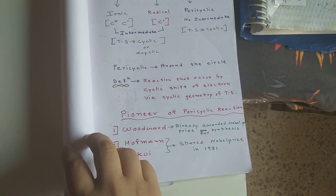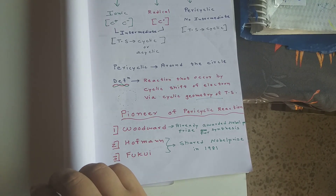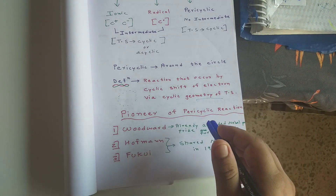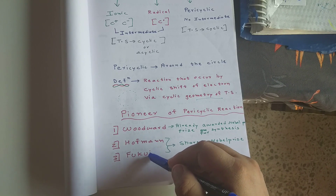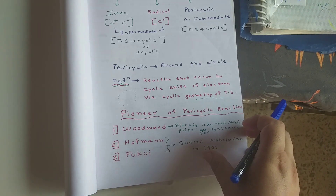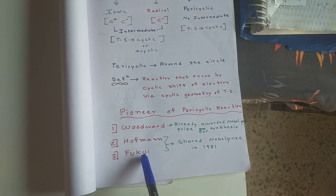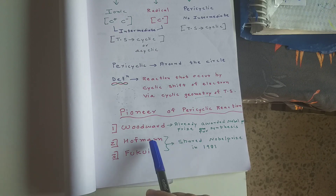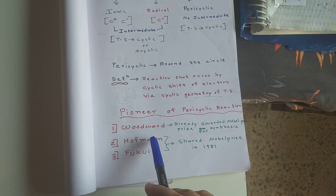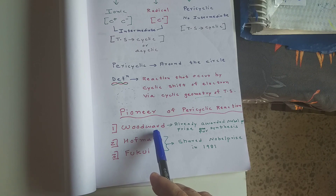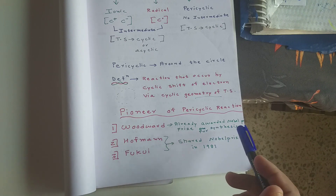The pioneers of pericyclic reactions are Woodward, Hoffman, and Fukui. These three did the systematic study and classification. Hoffman and Fukui have already received the Nobel Prize for studying and classifying pericyclic reactions and predicting products. They used molecular orbital theory. Woodward also made significant contributions, but he had already been awarded the Nobel Prize in 1965 for natural product synthesis.